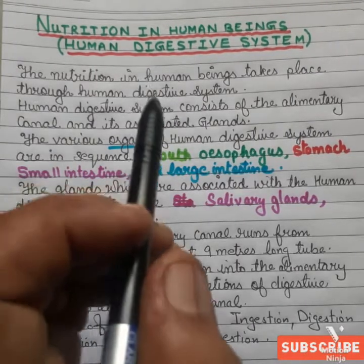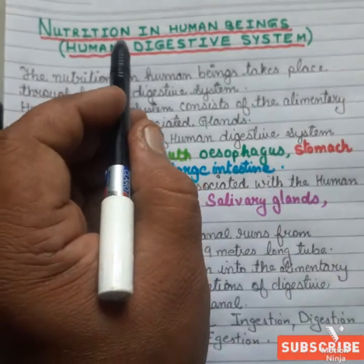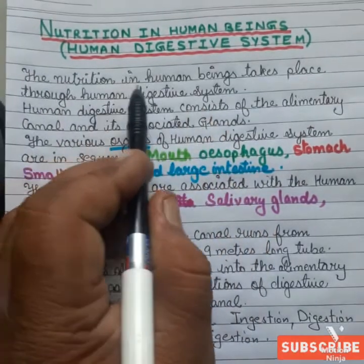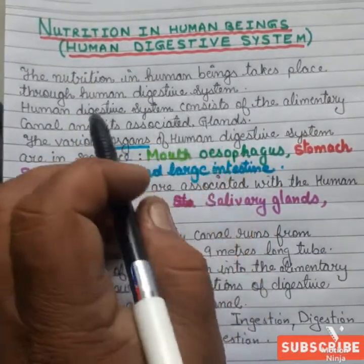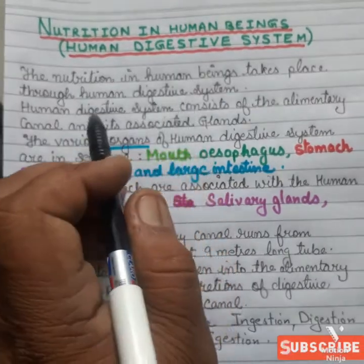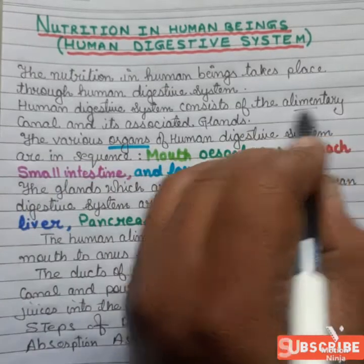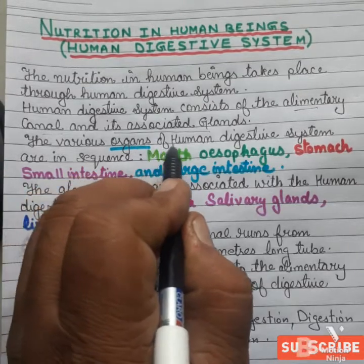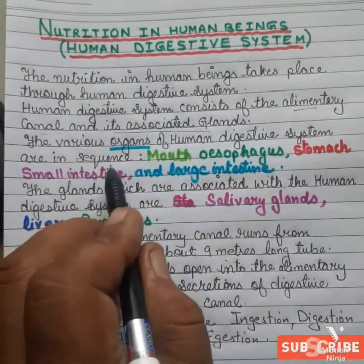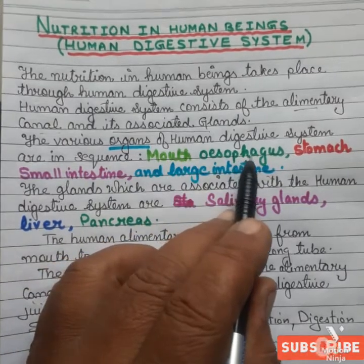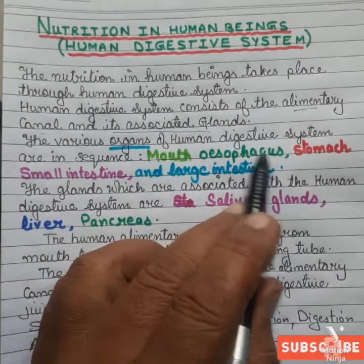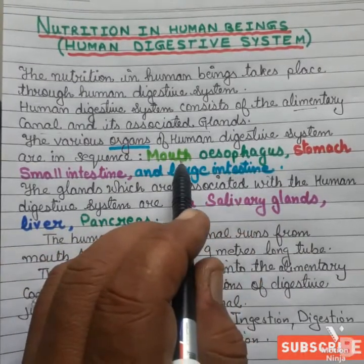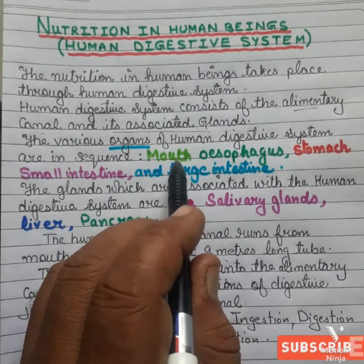Good morning students. Today we are going to discuss nutrition in human beings and the human digestive system. The human digestive system consists of the alimentary canal and its associated glands. The various organs of the human digestive system in sequence are: mouth, esophagus (food pipe), stomach, small intestine, and large intestine.